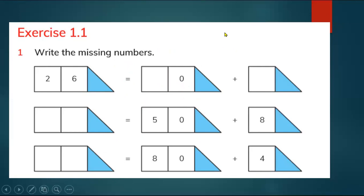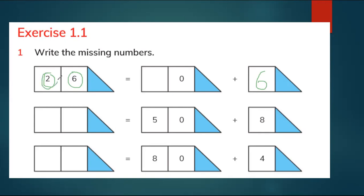Let's look at Exercise 1.1. Here we have two tens and six ones, and we have to find and write the missing numbers. Here is the first number — you write one because this is the ones box, and here is the tens place. How many ones? Six ones, without zero. How many tens? Two tens — zero is already there. So 20 and 6 make 26.